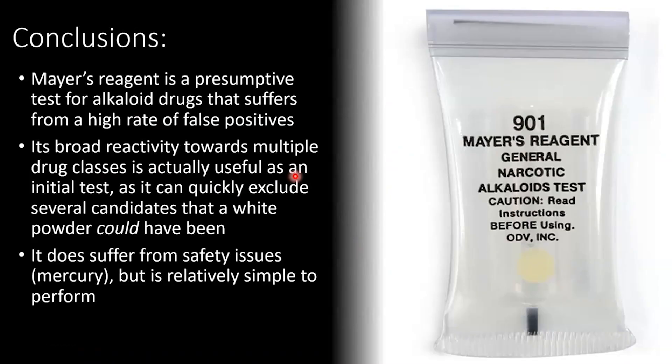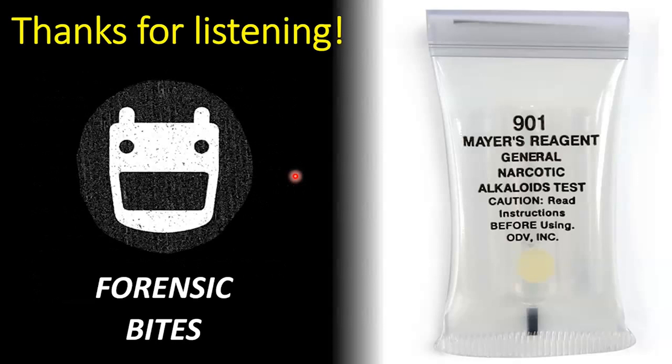To conclude, Mayer's Reagent is a presumptive test for alkaloid drugs that suffers from a high rate of false positives. However, this broad reactivity towards multiple drug classes is actually useful, as it allows us to quickly exclude several candidates for what the white powder could be. It does suffer from some safety issues as all mercury compounds will, but it is relatively simple to perform, hence why it's often used early in drug identification sequences. That's all for today — thanks for listening.